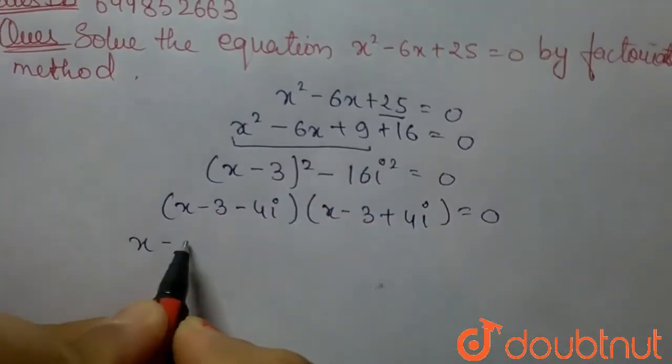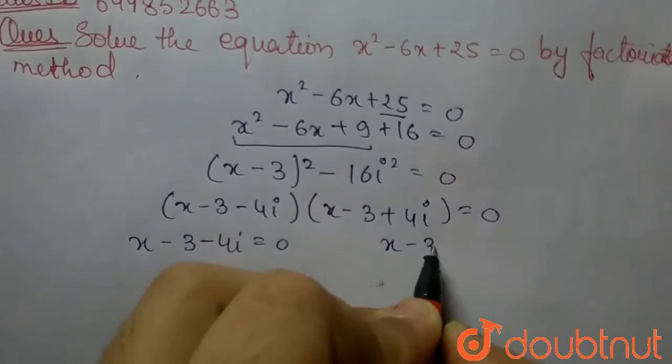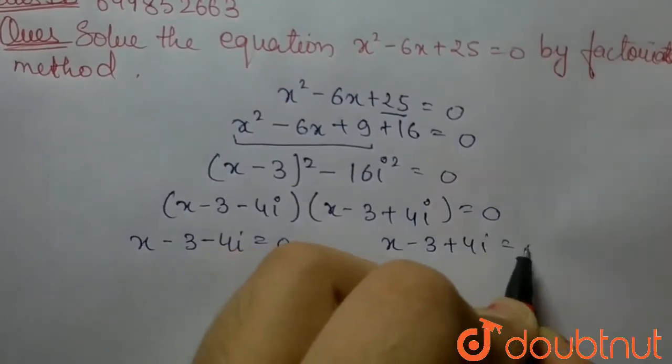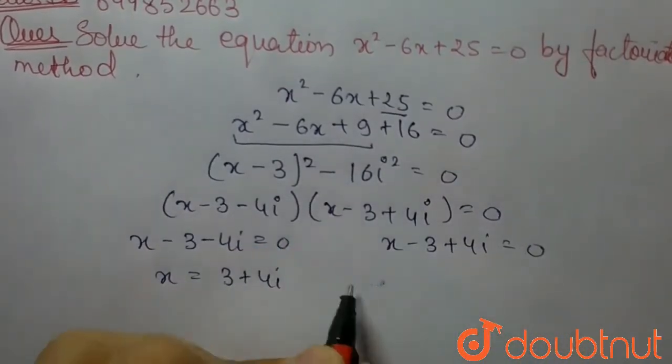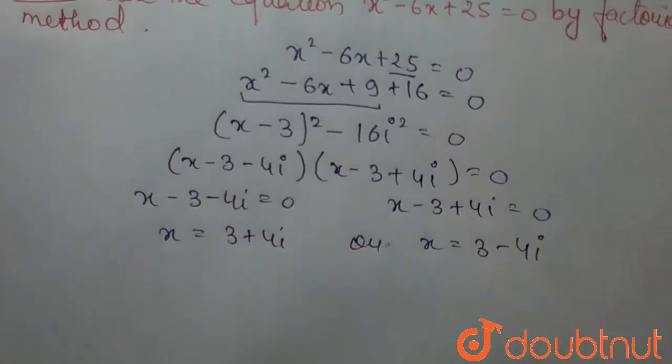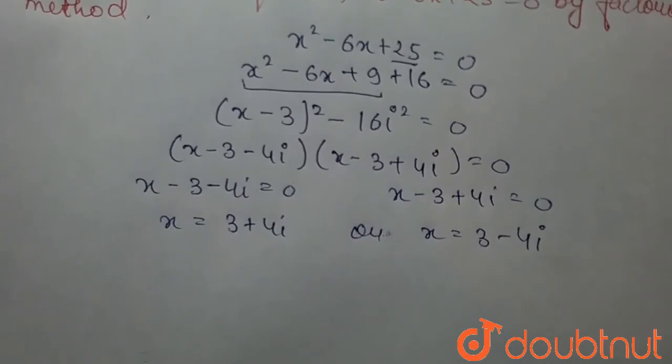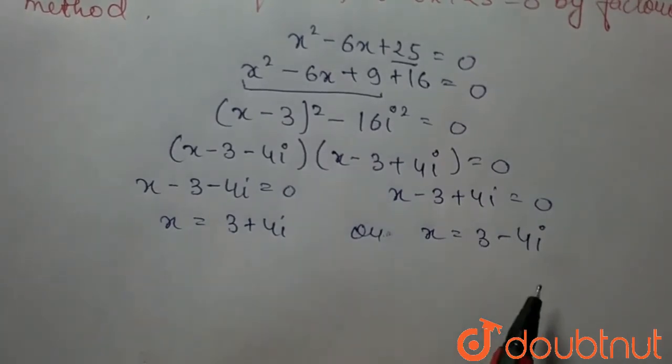So x - 3 - 4i = 0 and x - 3 + 4i = 0. Therefore, the value of x is 3 + 4i or x is 3 - 4i. So the roots of the given equation are 3 + 4i and 3 - 4i.